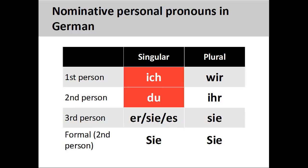Another actor appears on the stage, whom I would directly address as du, you. This second person singular personal pronoun is the informal form of address that can only be used with deity, family and relatives, close friends, young children, and pets.